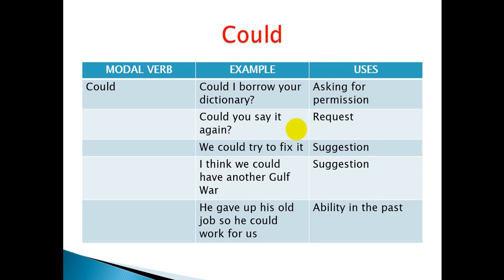Another example of a suggestion: 'I think we could have another Gulf War.' And for ability in the past, 'could' is used — for example: 'He gave up his old job so he could work for us.' Here 'gave' is the past tense of 'give,' and 'could' is the past form of 'can.'